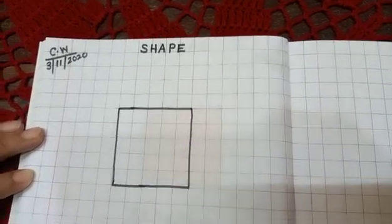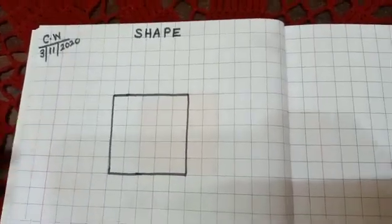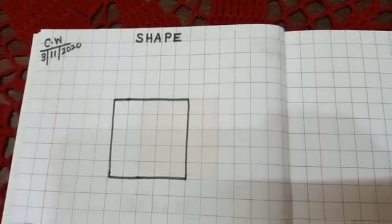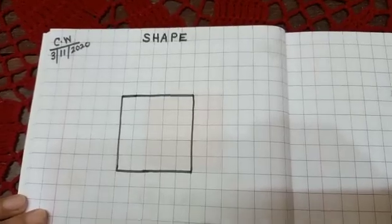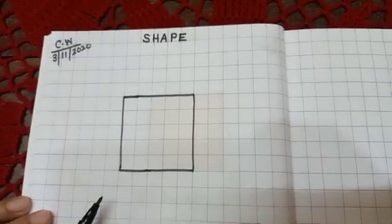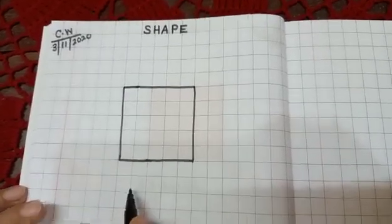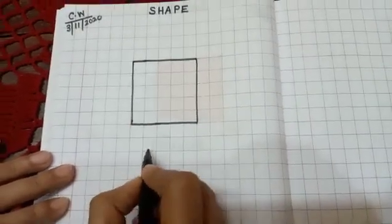Square has four sides and four corners. And here you will write square.